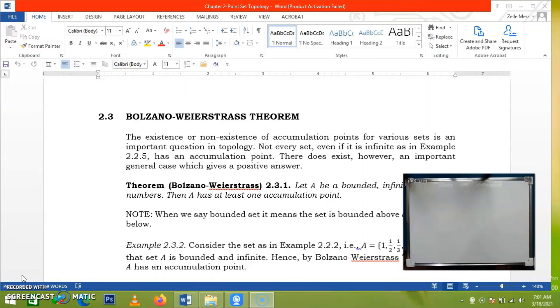Our previous topic talks about the accumulation point or points of a given set. Note that not every set, even if it is infinite, has an accumulation point. The question now is, when does the accumulation point exist for various sets? In other words, given a set, when can we say that the set has an accumulation point? Now, there is an important special case which gives a positive answer to the question.